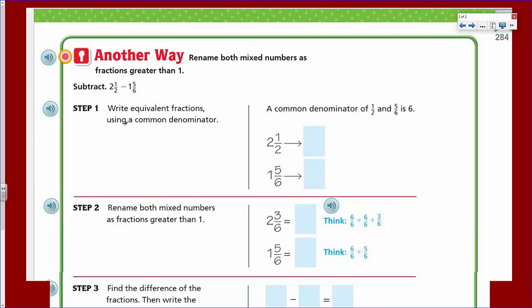So we have 2 1/2 minus, this is 2 1/2 minus 1 5/6. This is write equivalent fractions using a common denominator. All right. A common denominator of 1/2 and 5/6 is six. And this is true. We could go ahead and do that. So if that's a 6, then we know that 2 times 3 would equal the 6. So I'd have to multiply the numerator by 3. So I get 3, which let me put 2 3/6 over here. And then here we have the exact same denominator. Nothing changes. And then we end up with 1 5/6. Okay.